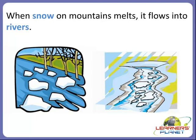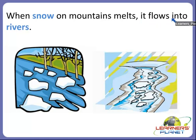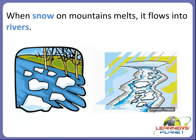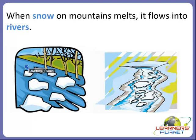When snow on the mountains melts, it flows into the rivers in the form of water. There are small snowflakes, and when they start melting they flow into the rivers in the form of water.